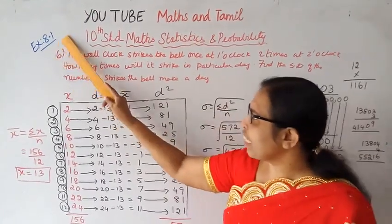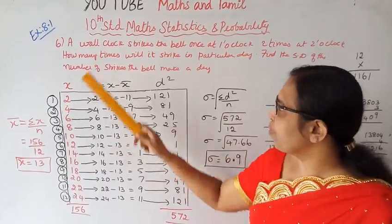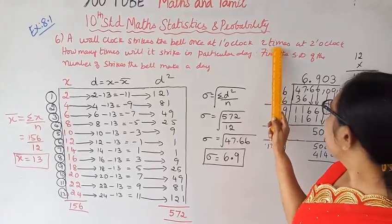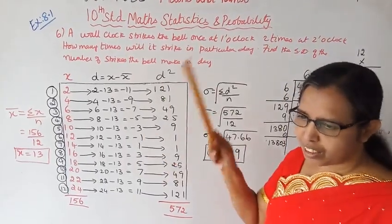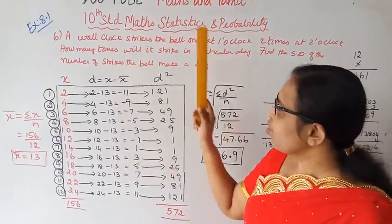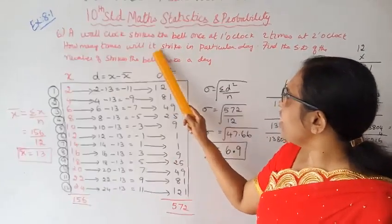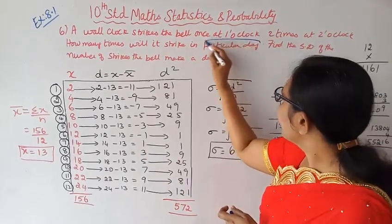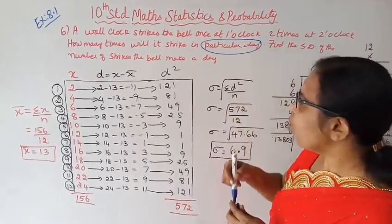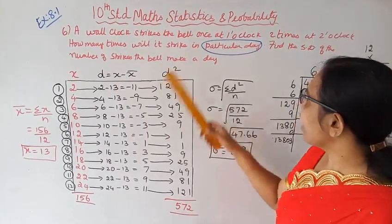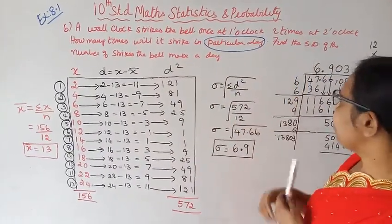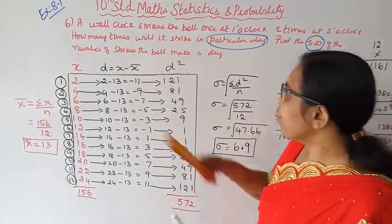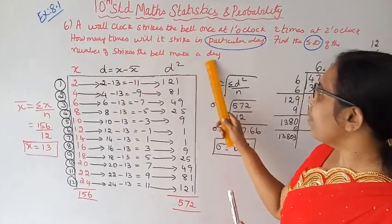Statistics Exercise 8.1, question 6. A wall clock strikes the bell once at 1 o'clock, 2 times at 2 o'clock, 3 times at 3 o'clock, 4 times at 4 o'clock. How many times will it strike in a particular day? Find the standard deviation of the number of strikes the bell makes in a day.